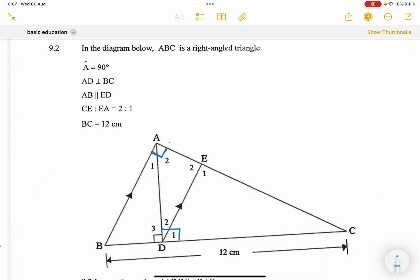They say AB is parallel to ED. That's indicated. And CE, or rather the ratio of CE to EA is 2 is to 1. So that means CE, there's CE over there, that's 2 to EA, which is 1.